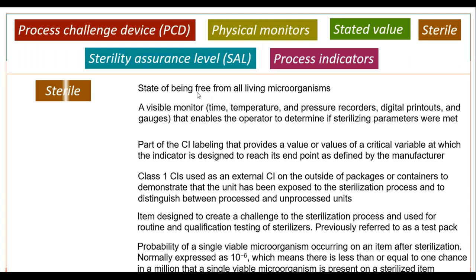The state of being free from all living organisms is sterile. Another definition they may bring up is a numeric value: 10 to the negative 6 would be considered sterile — meaning there is less than or equal to one chance in a million that a single viable organism is present on a sterilized item. That's our sterility assurance level.